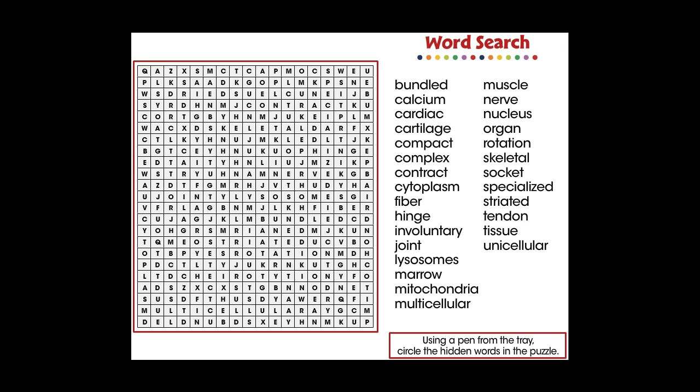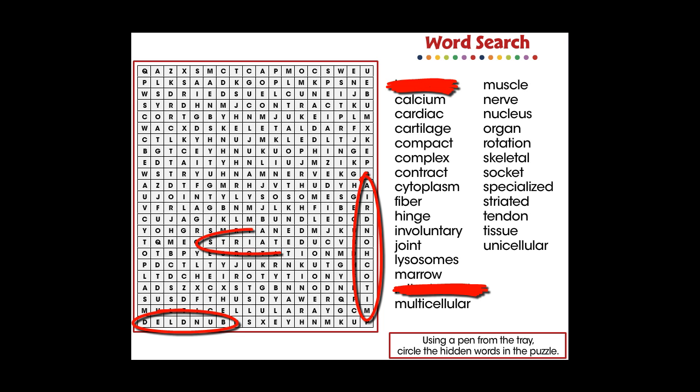In this word search activity, 28 vocabulary words are provided in a hidden puzzle. For middle school, this mini is great for vocabulary and comprehending all the words centered around the vocabulary in the topic of cells, skeletal, and muscular systems.